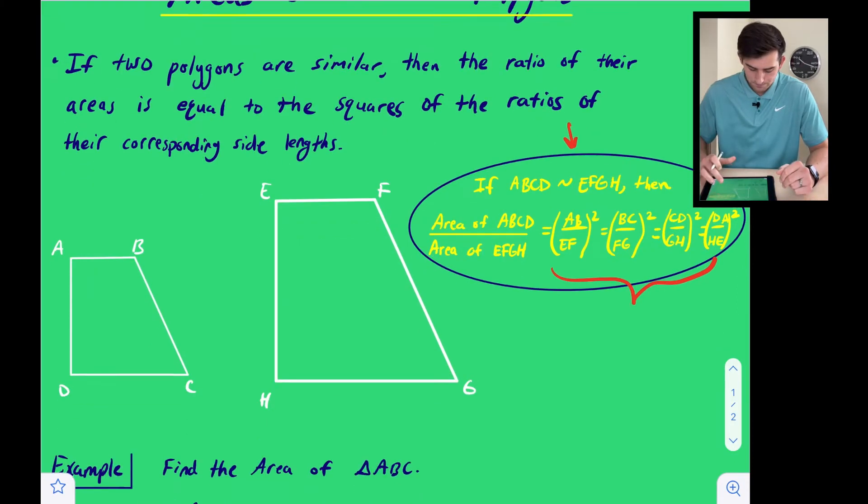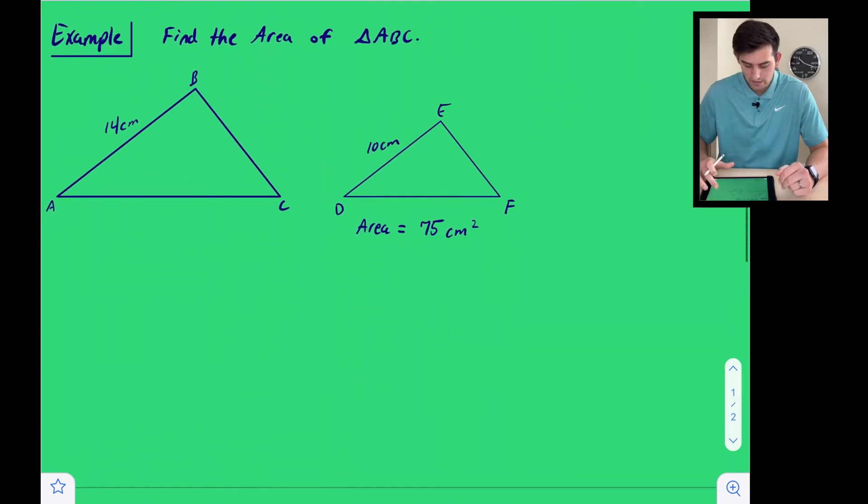So let's take a look at an example. We want to find the area of triangle ABC, which is over here on the left side. They have given us the side length of AB, the side length of DE, and also the area of the smaller triangle.